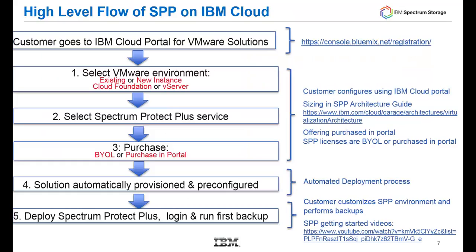When you go to the IBM Cloud to order Spectrum Protect Plus, this is the flow of how things will go. First, you'll go into the IBM Cloud portal for VMware Solutions. If you don't already have a registration, here's where you would log on at console.bluemix.net/registration. Once you're in there, you have two choices: do you want to utilize an existing VMware vCenter Server or Cloud Foundation, or do you want to create a new instance?